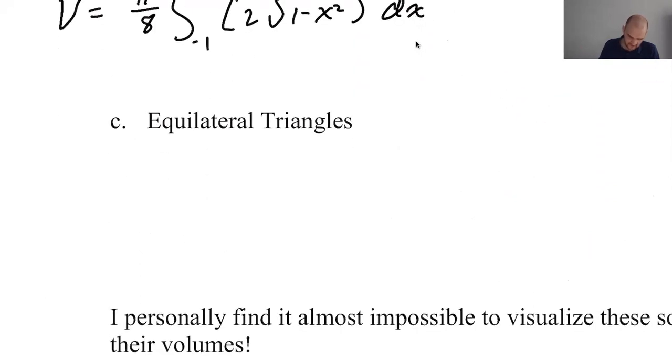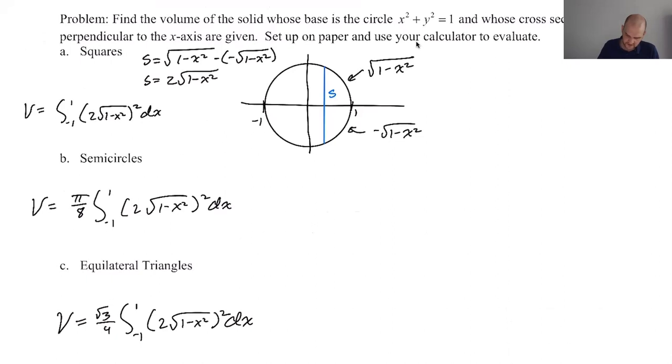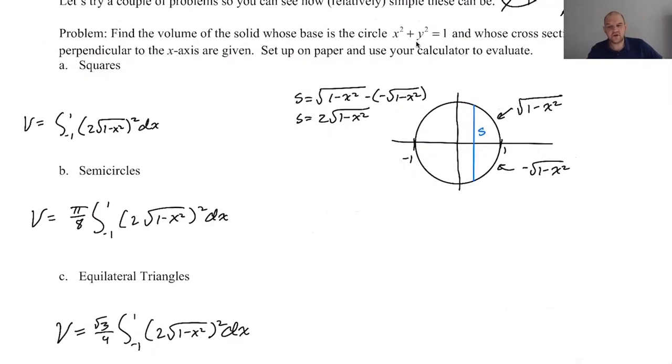Equilateral triangles, radical three over four, the integral from negative one to one, two root one minus x squared squared. These are your dream. You want these problems to show up. So I'm moving this a little bit. Okay. So that's it. If you can draw the region, if you can figure out what S is, and then you memorized your formulas, you're golden on these.